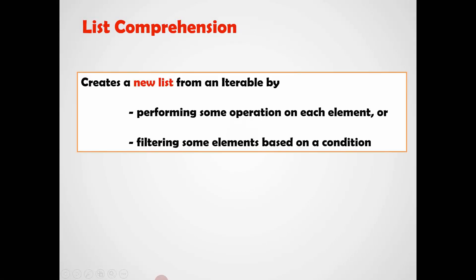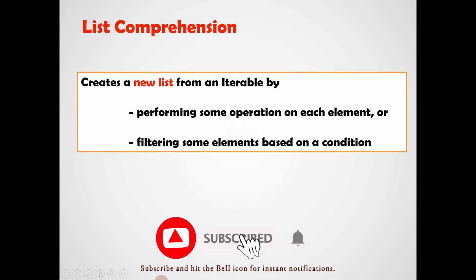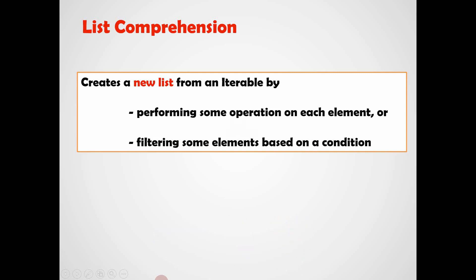List Comprehension: The main aim of list comprehension is to get a new list from an existing iterable. We can get a new list from an existing iterable by performing some operation on each element in the iterable. Also, list comprehension can get a new list from an existing iterable by filtering some of the elements present in that iterable object. In these two ways, we can get a new list from the existing iterable with the help of list comprehension.